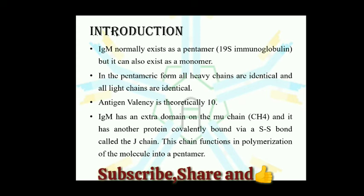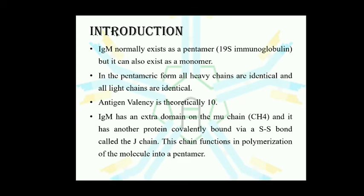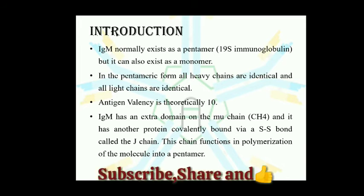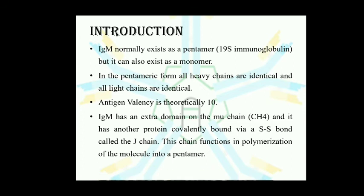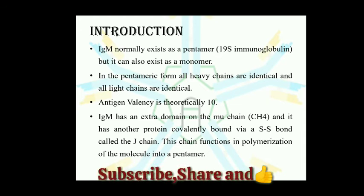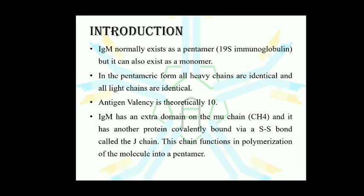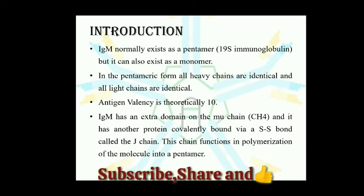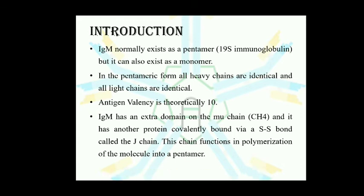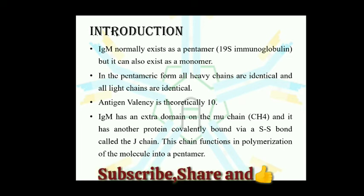IgM can also exist in a monomeric form. When present in the pentameric form, all the heavy chains and light chains within that form are identical to each other. For the monomeric form of antibodies, the antigen valency is two, so the theoretical antigen valency for IgM is 10, but practically that is not possible.